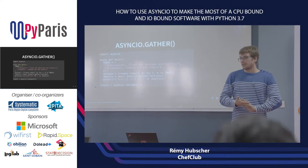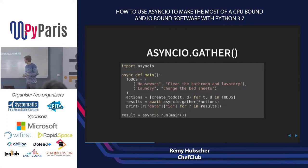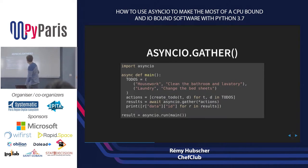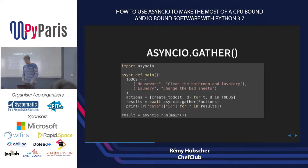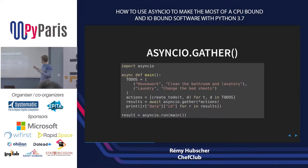Another thing that is really interesting with AsyncIO is the `gather` function, which allows you to run multiple coroutines in parallel. In this case, I want to create two to-dos at the same time. I create my to-do coroutine objects, then ask AsyncIO to run all of them in parallel. I receive an array with the result of each coroutine in the same order as the gather call. The star in front of the variable expands the actions array as parameters of the gather function.